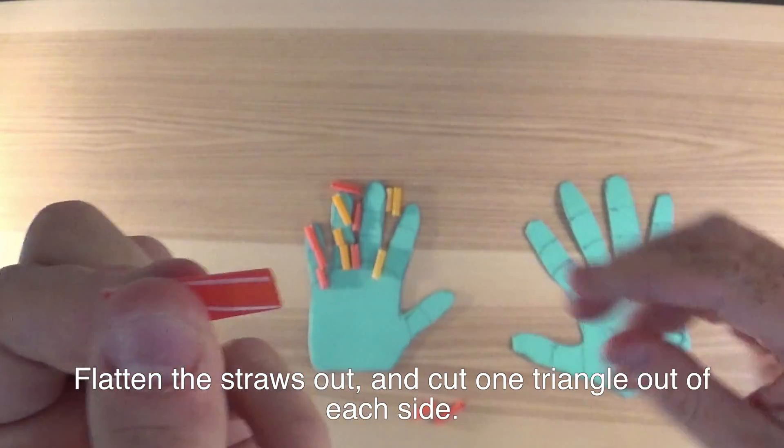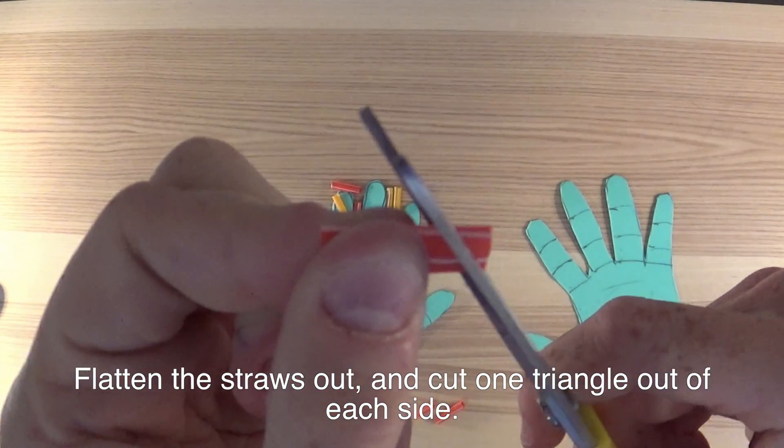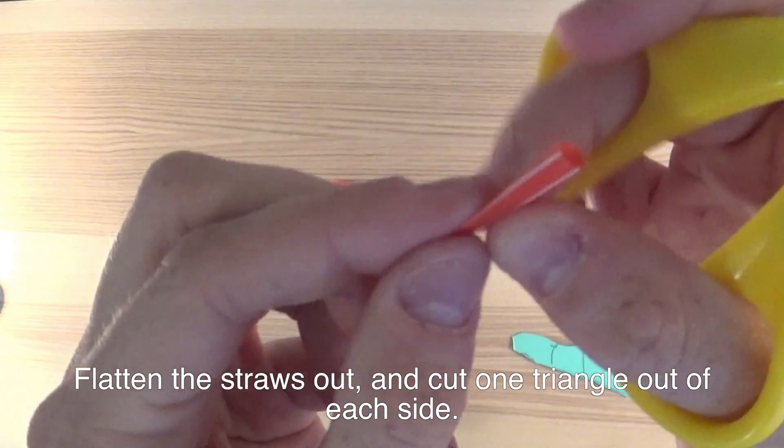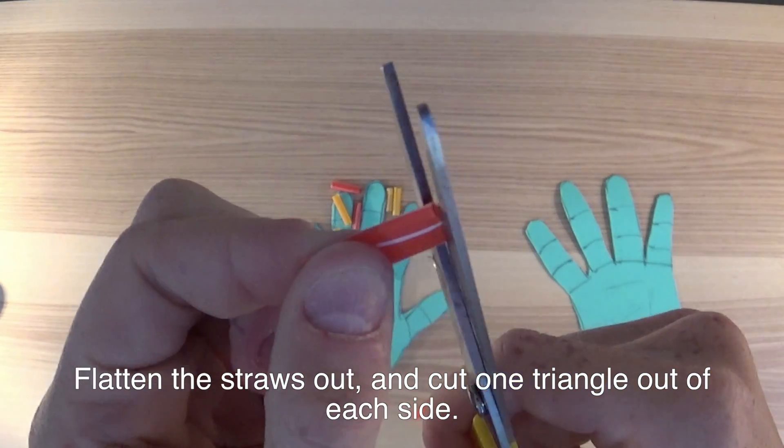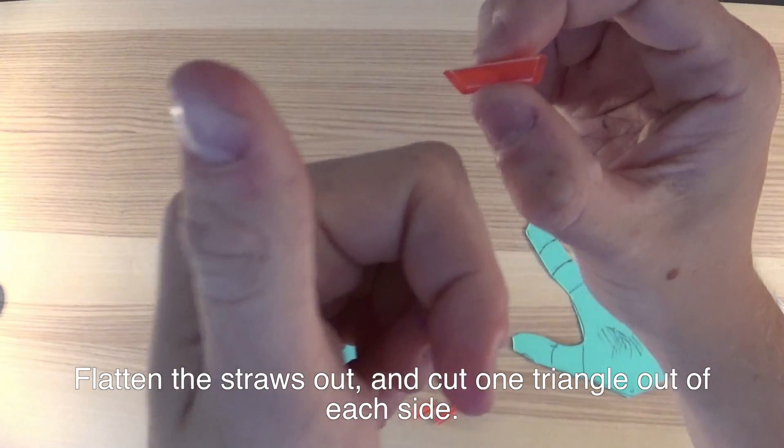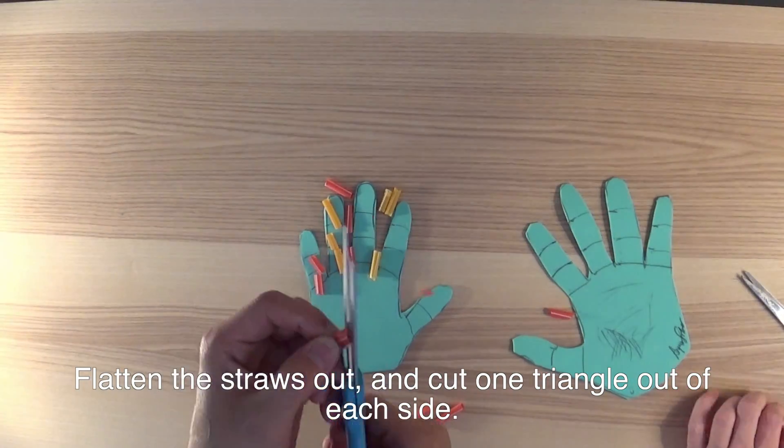Flatten the straws out and cut one triangle out of each side. Make sure that the triangles face opposite directions. Repeat this with all of your straws.